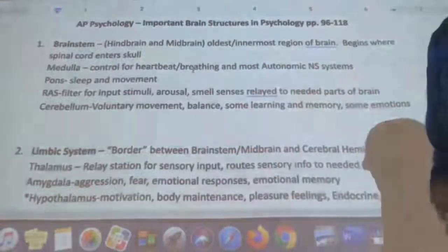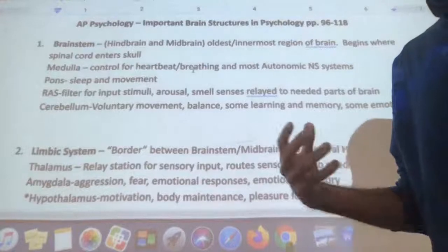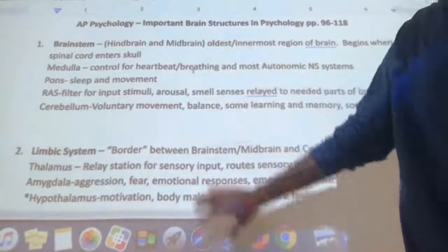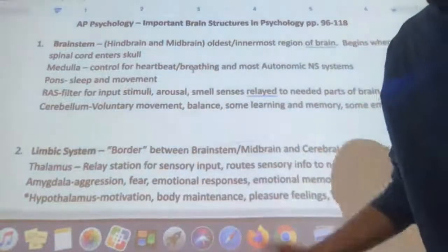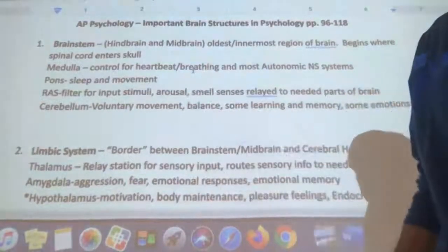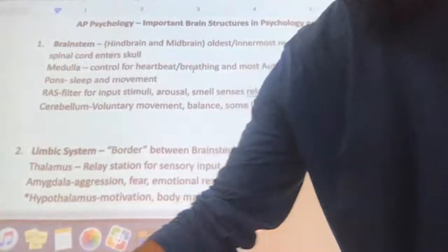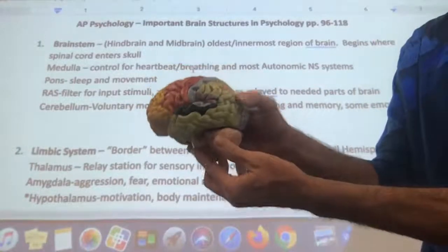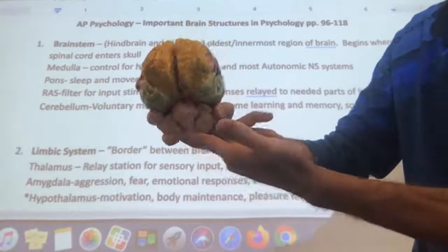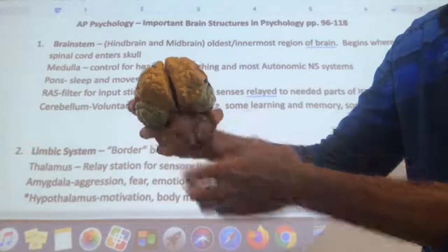The first area the book covers is the brainstem. Most people organize the brain into three main regions: hindbrain, midbrain, and forebrain. The brainstem would contain both the hindbrain and the midbrain. It's the oldest, innermost region of the brain — it's where the spinal cord enters the skull. On my brain model here, this is the brainstem, which extends down to the spinal cord. It's the base of the brain and connects the spinal cord to the brain.